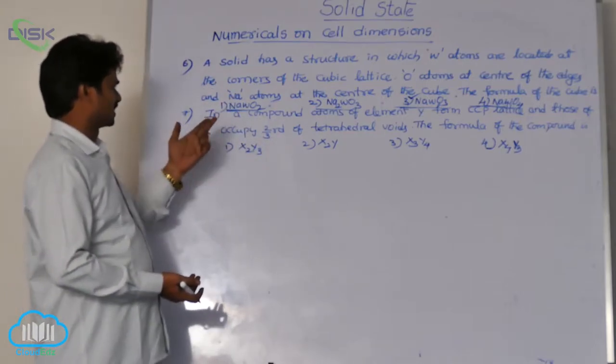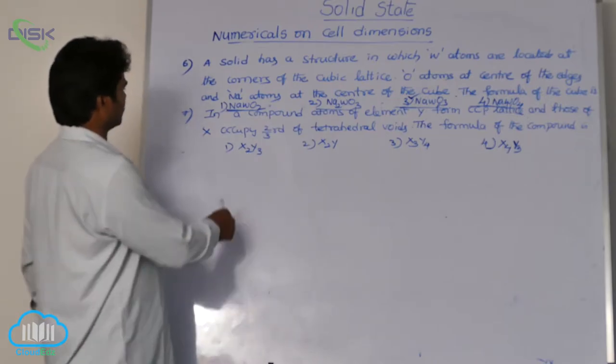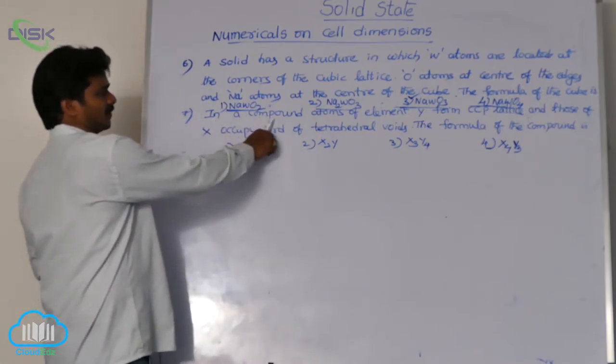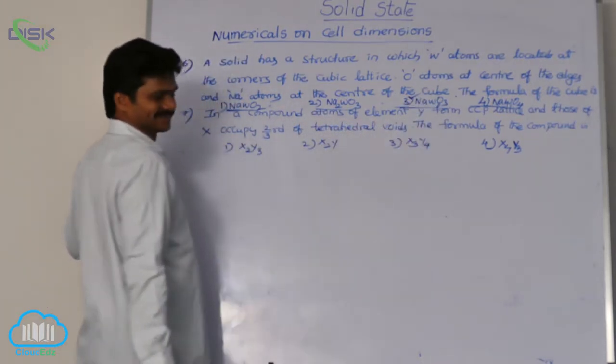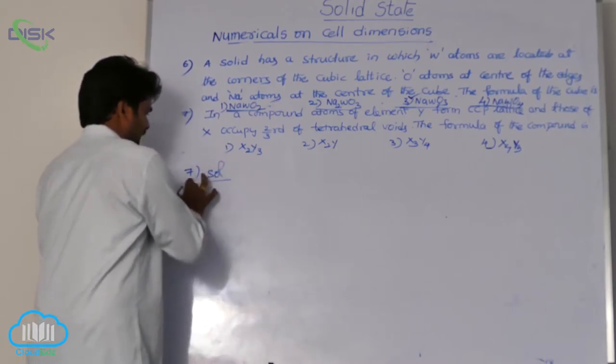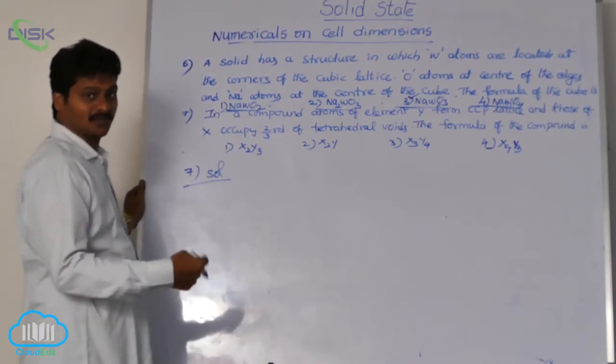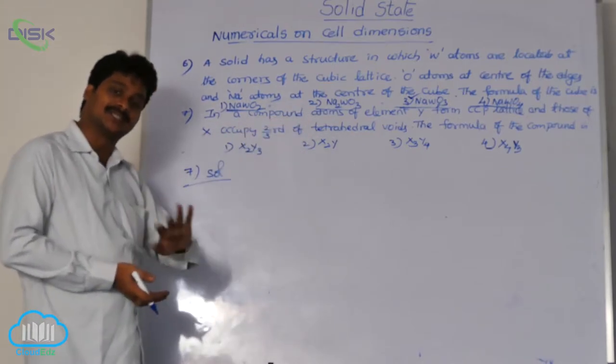But here it mentions atoms X and Y. See the question first: in a compound, atoms of element Y form CCP lattice. So see the solution for the seventh question, where atoms of Y form CCP. CCP and FCC are the same.